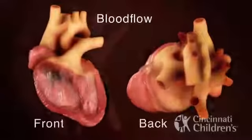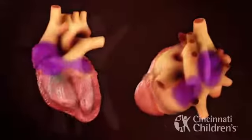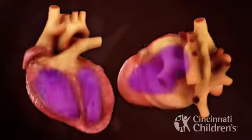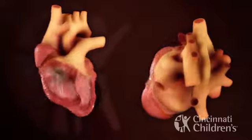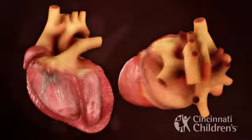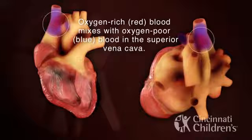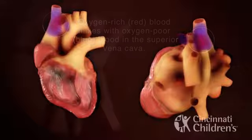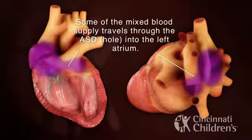Blood flow in TAPVR: oxygen-rich red blood enters the pulmonary veins, then it mixes with oxygen-poor blue blood in the superior vena cava. Some of the mixed blood supply travels through the ASD into the left atrium.